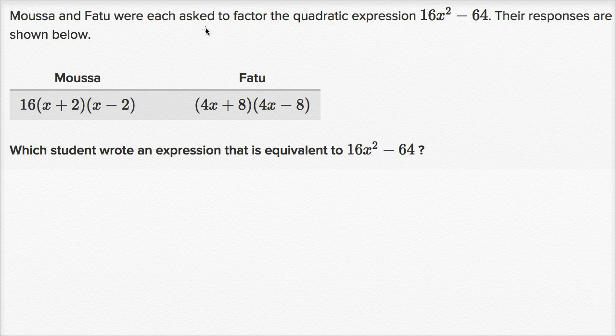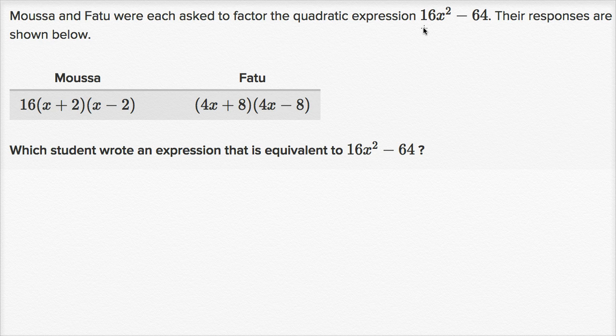Moussa and Fatou were each asked to factor the quadratic expression 16x squared minus 64. Their responses are shown below. Moussa factored it this way, Fatou factored it this way. Which student wrote an expression that is equivalent to 16x squared minus 64?